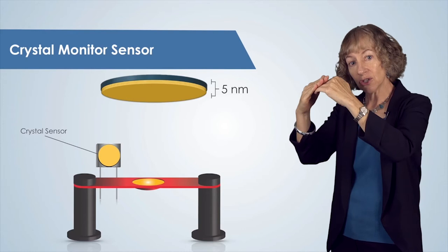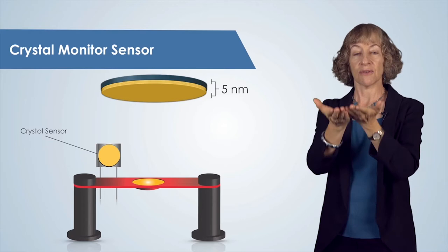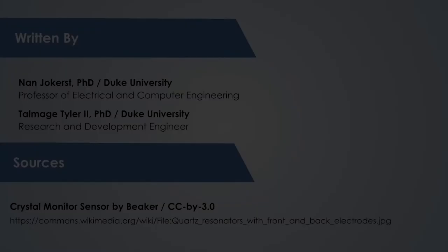When the desired thickness is reached, we stop the flow of electrical current through the boat, which stops the heating of the source and halts the deposition. Thermal evaporation is one thin film vacuum deposition option. Be sure to look at the electron beam evaporation and sputter deposition videos to learn about two other commonly used thin film vacuum deposition techniques.